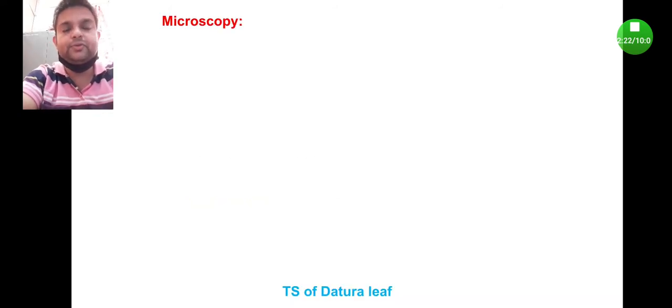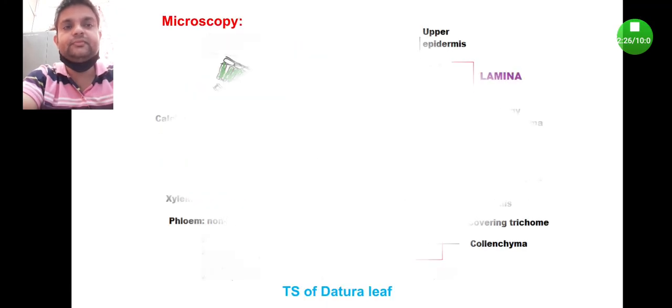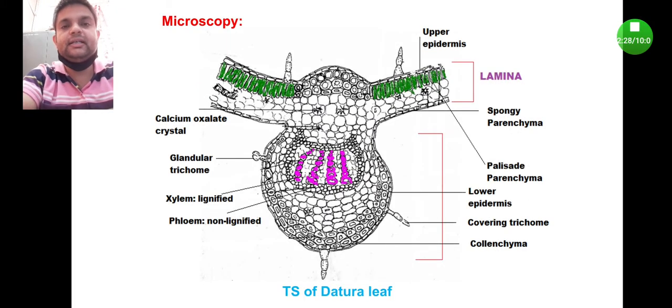Coming to the microscopy. This is the diagram of a transverse section of datura leaf. After performing the transverse section, when you place it under the microscope, you will observe a structure like that.